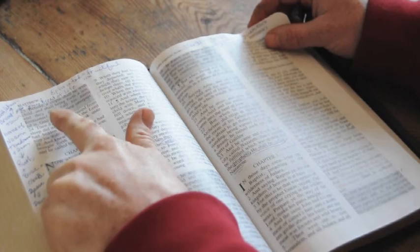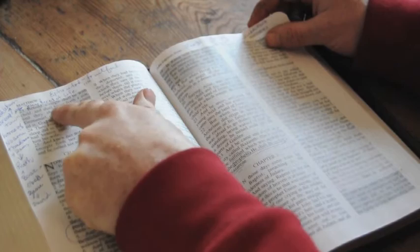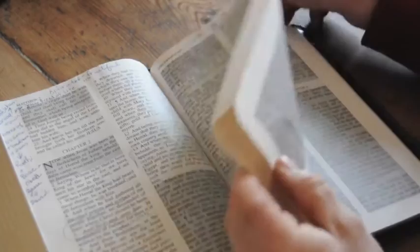Matthew 2, verse 23, speaks of the virgin with the child shall bring forth a son. This is a prophecy of Jesus the Christ being born.